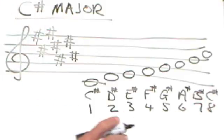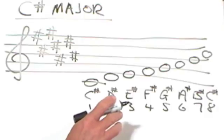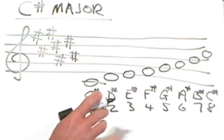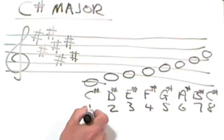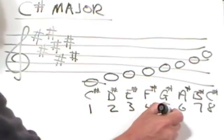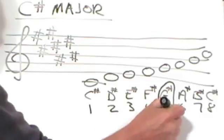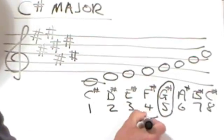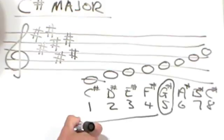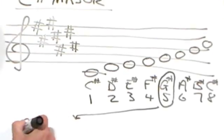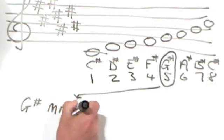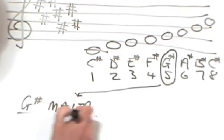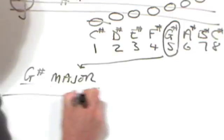So that's as far as we've got in previous lessons, but we said we'll now continue the same process that's got us thus far. So that's taking 1, 2, 3, 4, 5, the fifth letter of that key, G sharp.